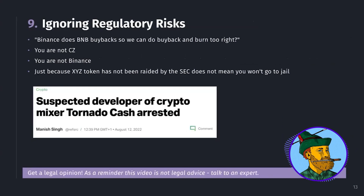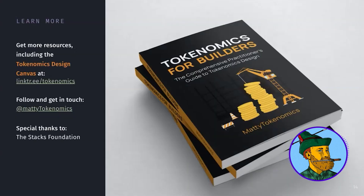Finally, the last mistake is ignoring regulatory risks. I hear this all the time: 'Binance does BNB buyback and burn, so can we do that too?' You are not CZ. You are not Binance. Just because some token hasn't been raided by the IRS or SEC yet does not mean you can do the same thing and not face consequences. This is not hyperbole — with the recent arrest of a Tornado Cash developer, these are serious implications. You need to get a legal opinion. This video is not legal advice; you need to talk to an expert. That's the nine biggest mistakes builders make when it comes to their tokenomics. In the next video, we'll dive into the first step of the tokenomics design process itself.